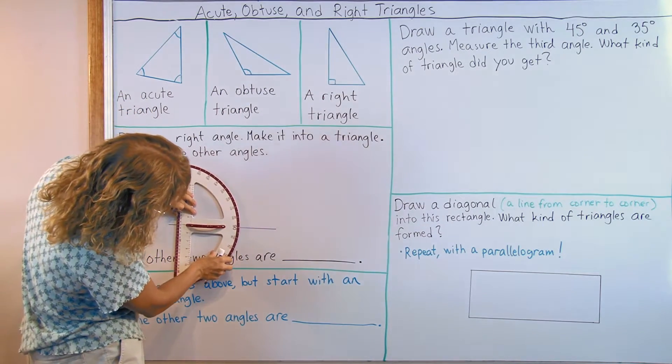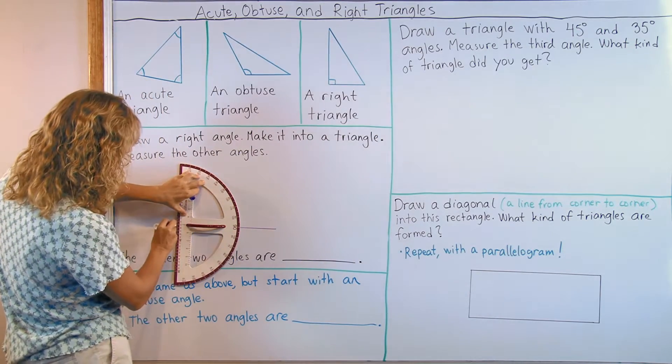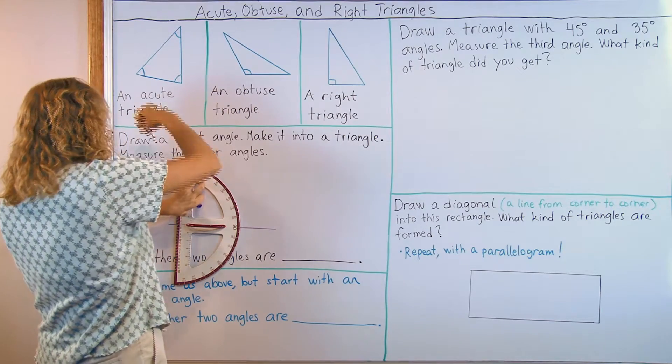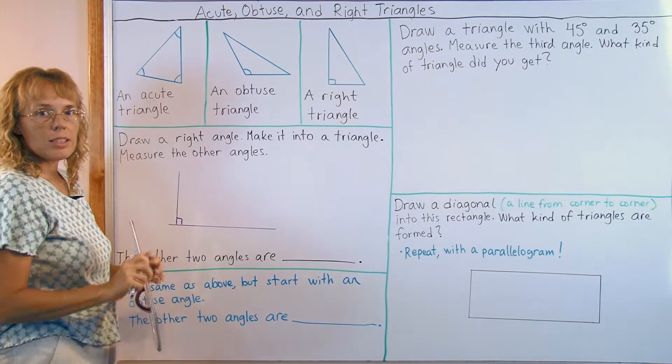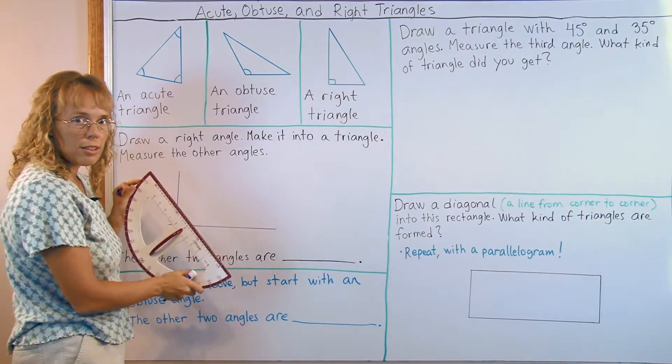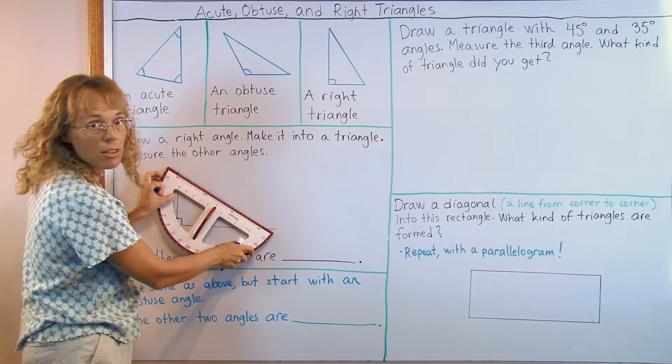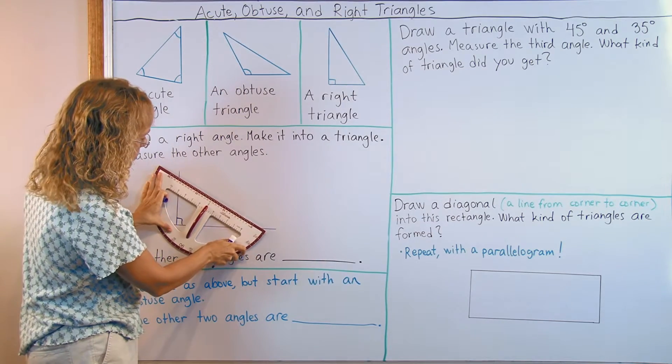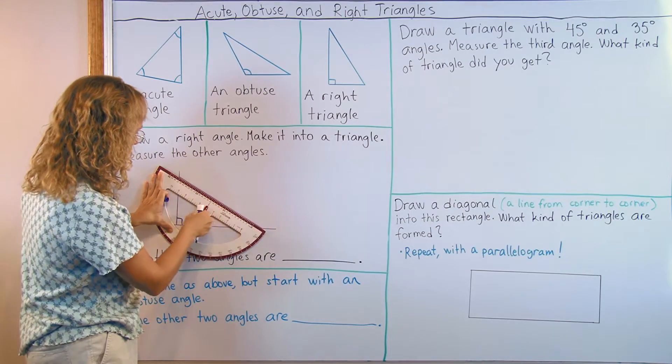I need to line up my protractor just right here at the 90 degree mark. So now I have my right angle here. And I can make this into a triangle by drawing in the third side anywhere. Lots of possibilities.